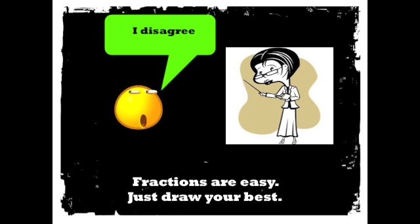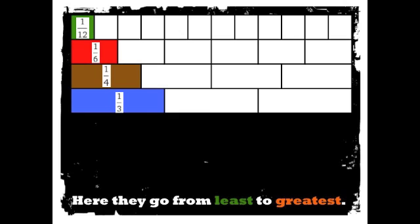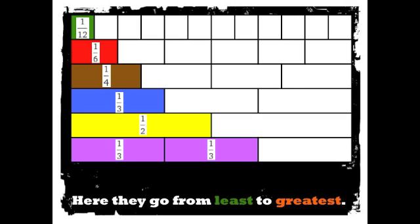Fractions are easy, just draw your bets. Here they go from least to greatest: one twelfth, one sixth, one fourth, one third, one half, two thirds, three fourths.